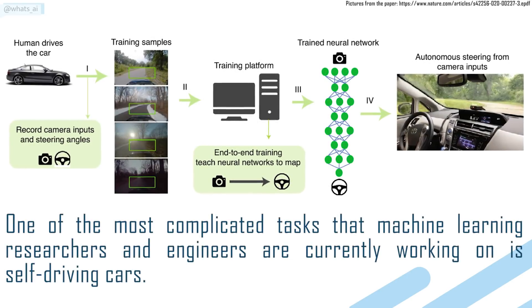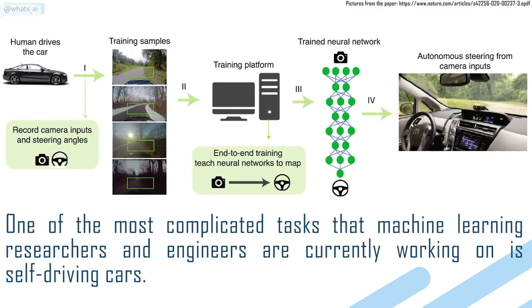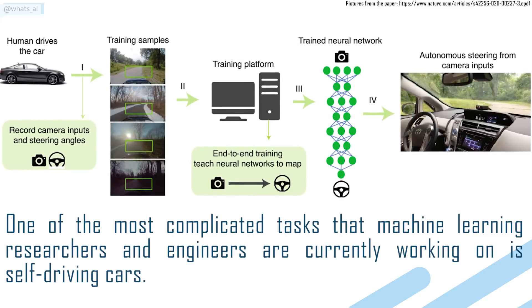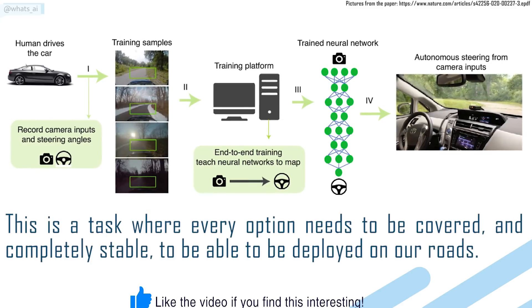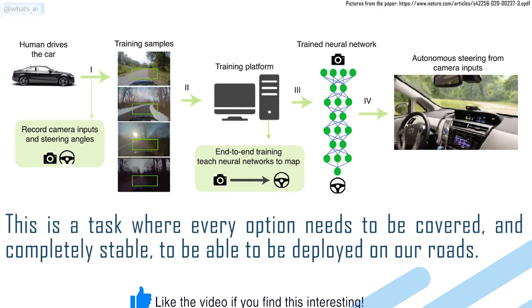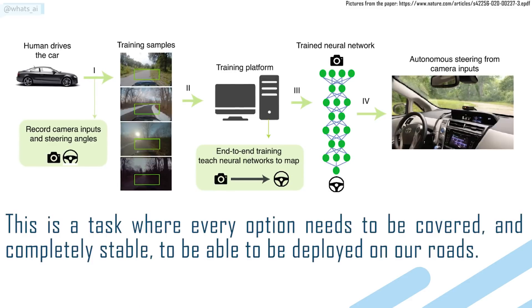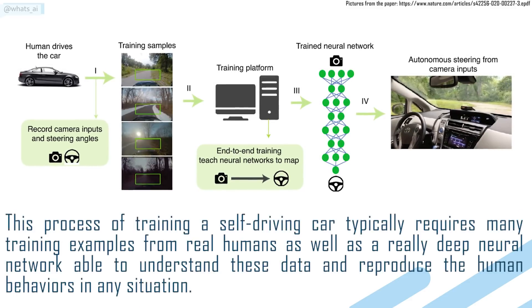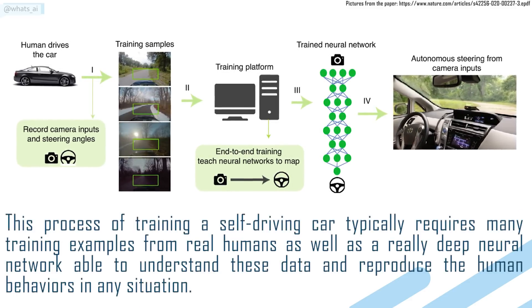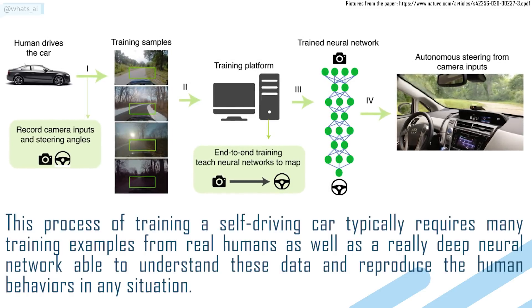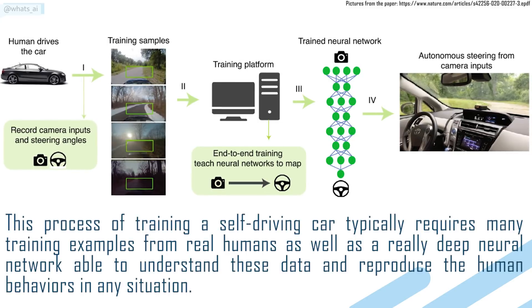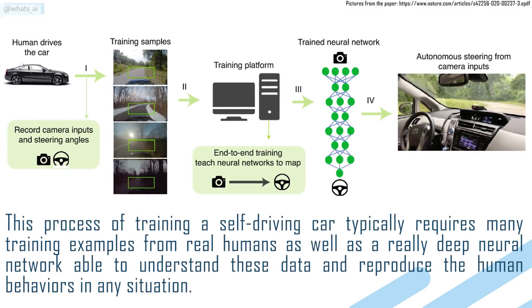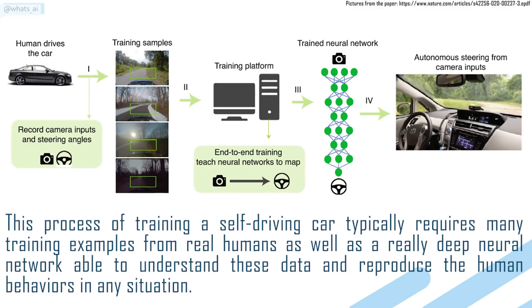One of the most complicated tasks that machine learning researchers and engineers are currently working on is self-driving cars. This is a task where every option needs to be covered and completely stable to be able to be deployed on our roads. This process of training a self-driving car typically requires many training examples from real humans as well as really deep neural networks able to understand these data and reproduce the human behaviors in any situation.